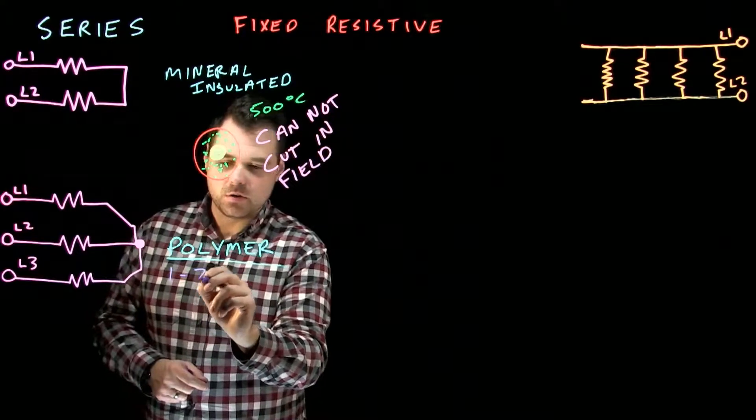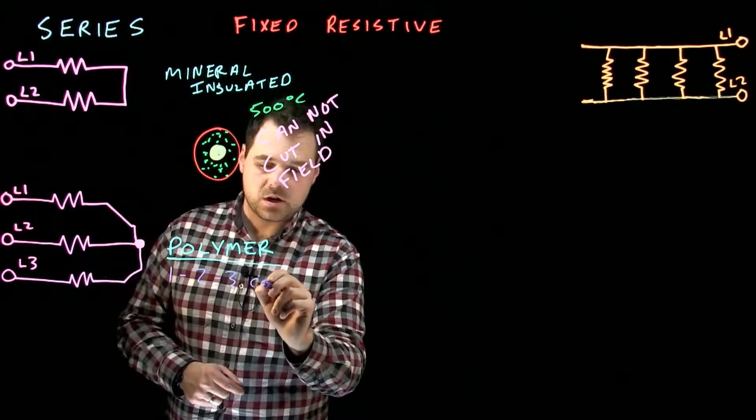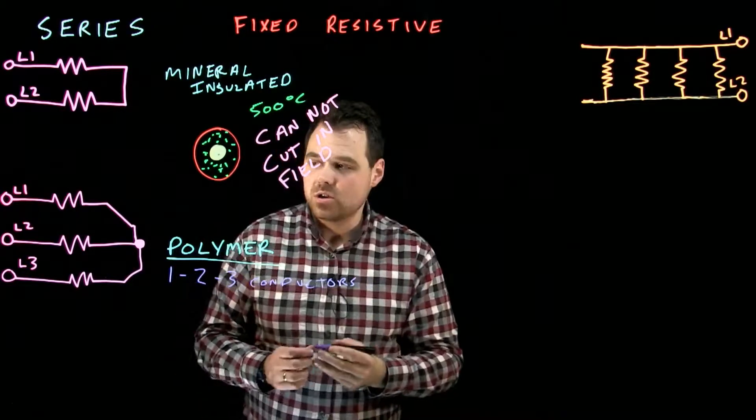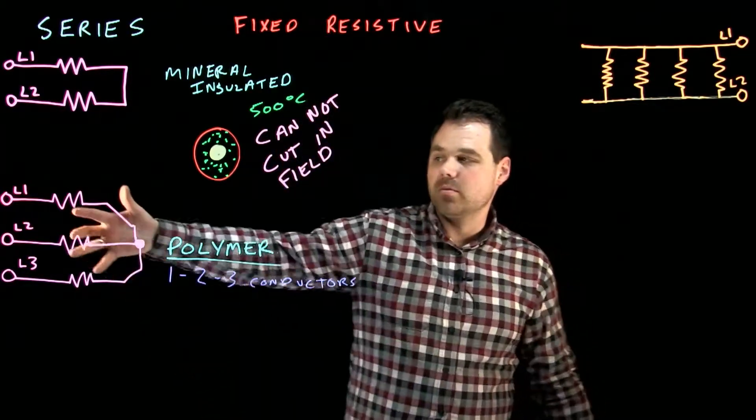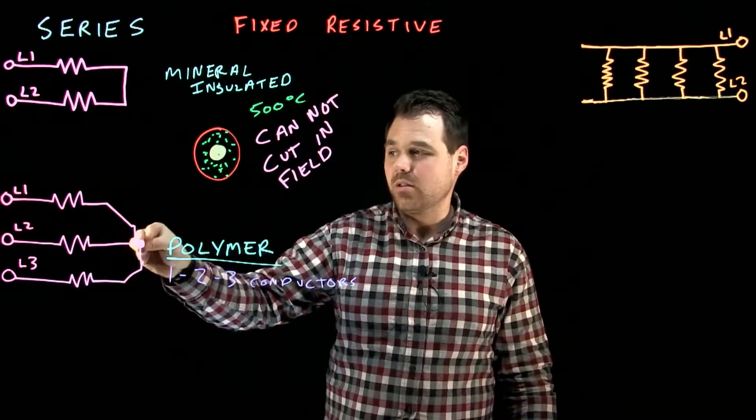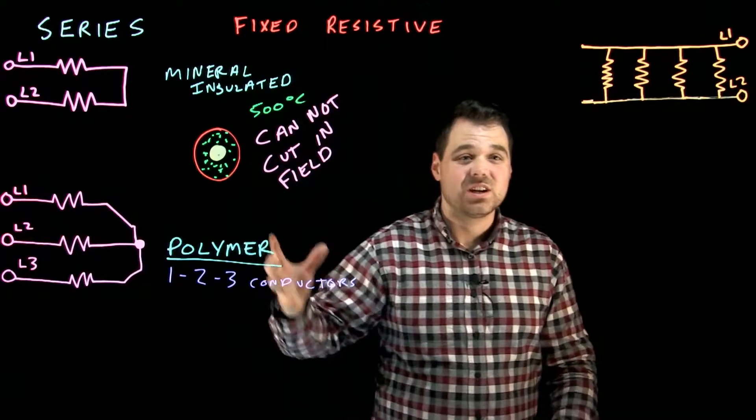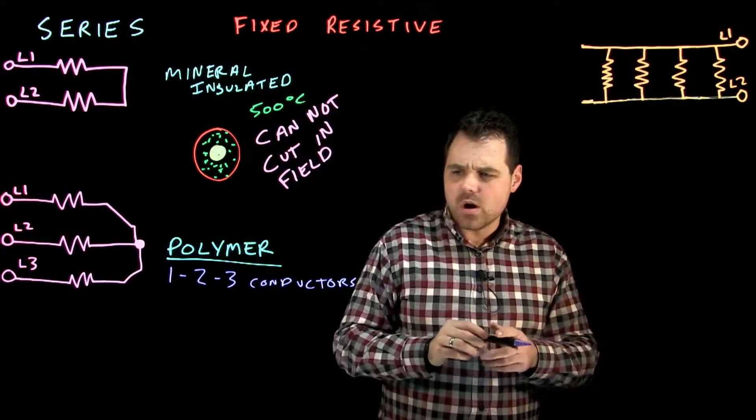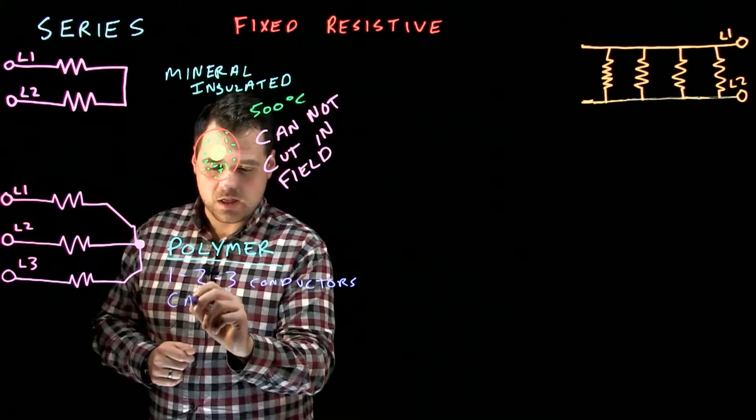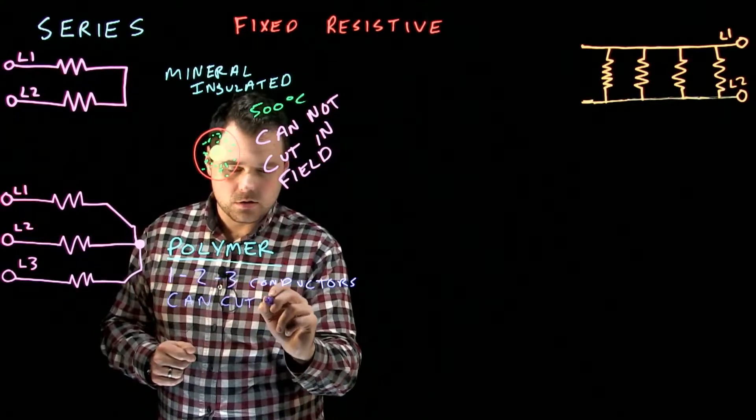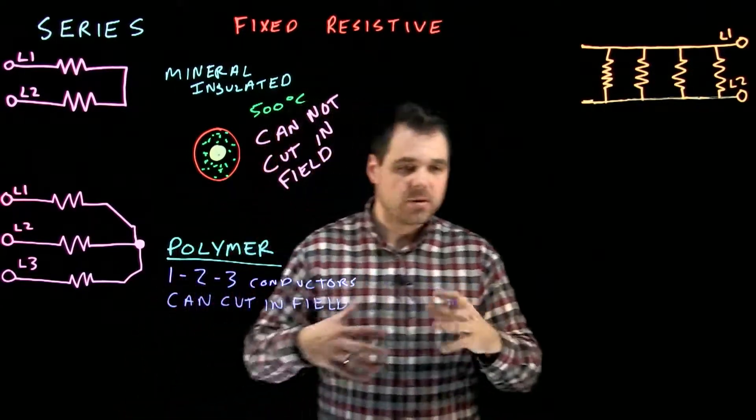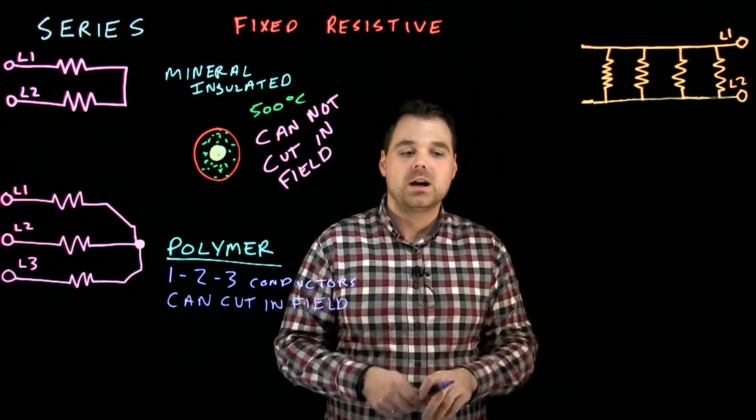It can come in one, or two, or three conductor configurations. So we can wire them like this, three phase, with three conductors. We can do an end cap on the end. We can do two, or we can just have a single. So now, with this, you can cap this in the field. It comes with a kit, where you can terminate the ends and safely connect it.